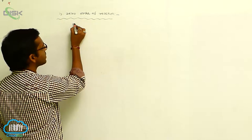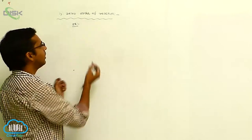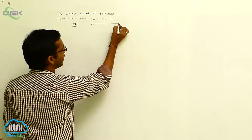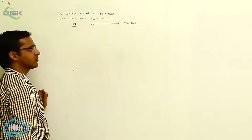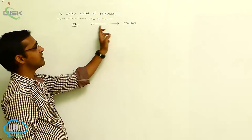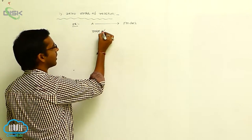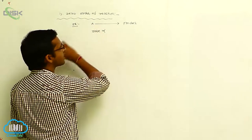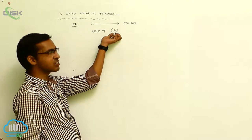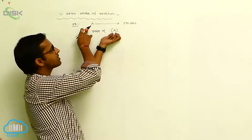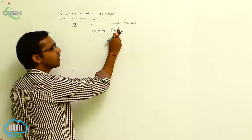For this, we discuss its mathematical equation derivation. So, derivation of zero order of reaction. For example, A is converted to product. While conversion of A to product, its mathematical equation: the rate is directly proportional to its concentration term, that is concentration of A. But the reactant is not dependent on concentration, so its concentration term power is zero, because there is no concentration dependence.